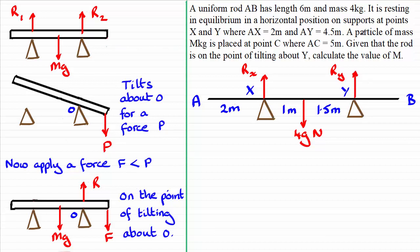Now we're told that a particle of mass M kilograms is placed at a point C, where AC is five metres. Well, AY is four point five metres, so that just leaves us with half a metre to go from Y.